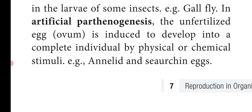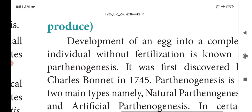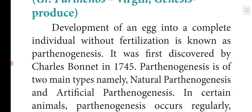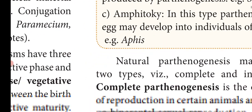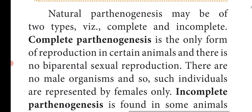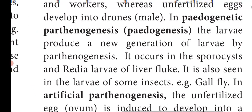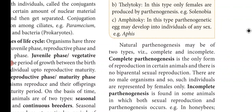Parthenogenesis is the development of an egg into a complete individual without fertilization. It is classified into two main types: Natural Parthenogenesis and Artificial Parthenogenesis. Natural Parthenogenesis is further of two types: Complete Parthenogenesis and Incomplete Parthenogenesis. With this, we conclude the topic and have covered this chapter. In the next class, we will be starting with a new chapter. Thank you.